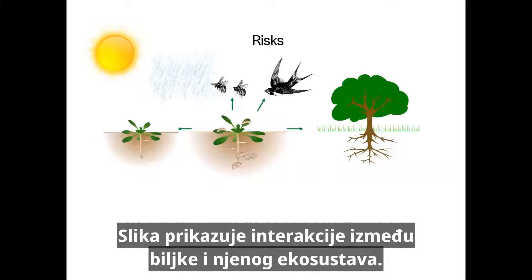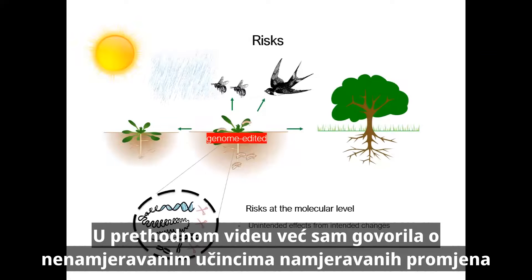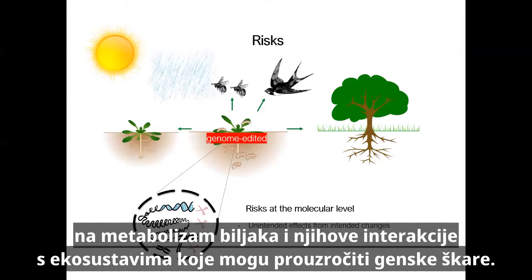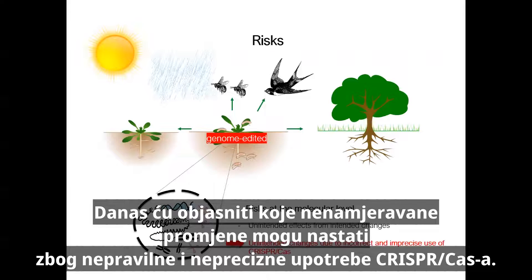The figure shows the interactions between a plant and its ecosystem. In the previous video I already talked about the unintended effects from intended changes on the metabolism of plants and their interactions with ecosystems that can be caused by the gene scissors. Today I am going to explain which unintended changes can be caused due to the incorrect and imprecise use of CRISPR-Cas.